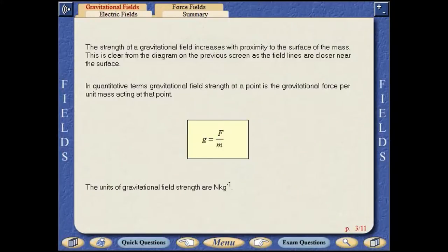The strength of a gravitational field increases with proximity to the surface of the mass. This is clear from the diagram on the previous screen, as the field lines are closer near the surface.